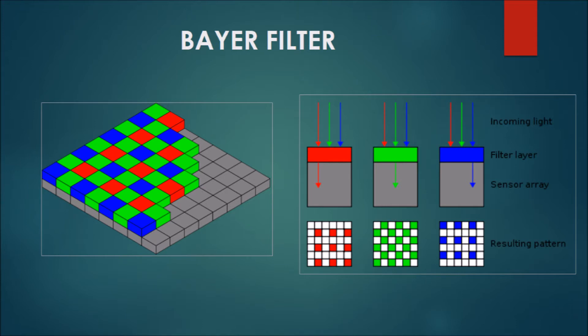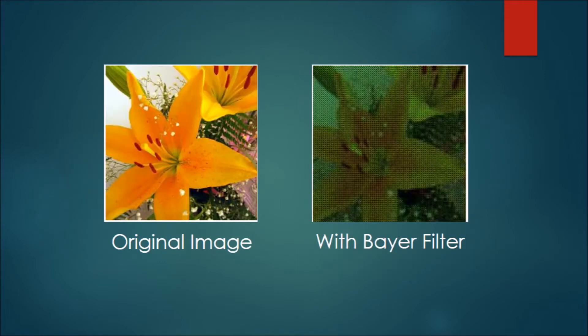Let us see how the Bayer filter works. Bayer filters allow light of different wavelengths to pass through corresponding sections. It is placed above the silicon layer. As the human eye is more sensitive to green color and finds it soothing, the pattern of pixels thus formed consists of 50% green information, 25% blue information, and 25% red information in alternate patterns. Here is a comparison of the original image and the one formed after using a Bayer filter. For a particular pixel covered with a green filter, it had the perfect amount of green but lacked red and blue percentages, resulting in distorted images.